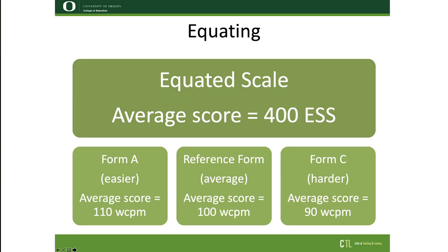DIBELS 8th Edition uses what are called equated scaled scores, which means that the raw score — that is, the number of words read correctly, or number of items answered correctly on a maze passage — are equated statistically to a reference form, and further scaled, which allows us to make comparisons both across forms and across the distribution of scores for a range of students.